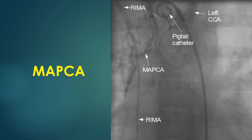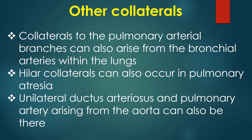MAPCAS can originate from either of the subclavian arteries or their branches, the transverse aorta, descending thoracic aorta, abdominal aorta at or below the level of the diaphragm, or coronary artery. Collaterals to the pulmonary arterial branches can also occur from bronchial arteries within the lungs. Hilar collaterals can also occur in pulmonary atresia, and unilateral ductus arteriosus and pulmonary artery arising from the aorta can also be present.